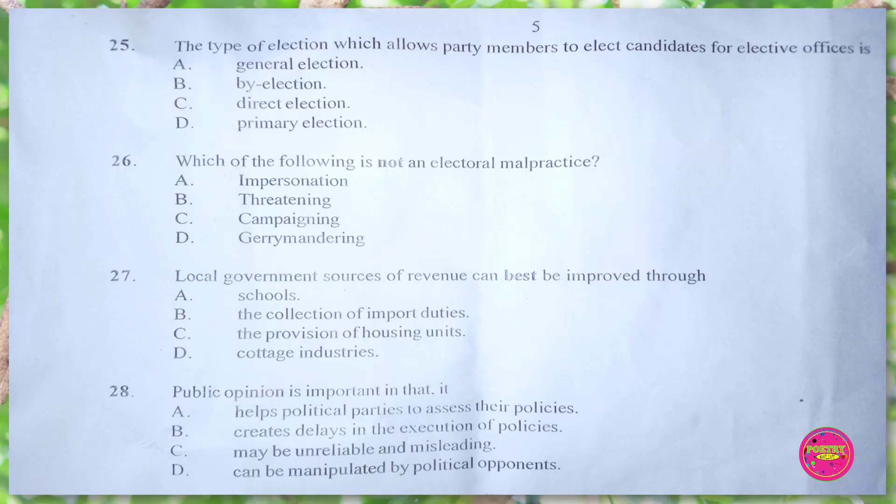Question 26. Which of the following is not an electoral malpractice? A. impersonation, B. threatening, C. campaigning. The correct answer is C. campaigning.